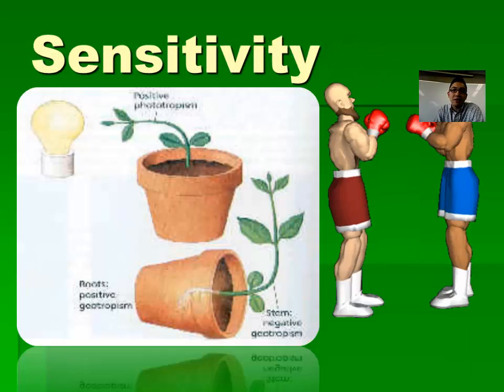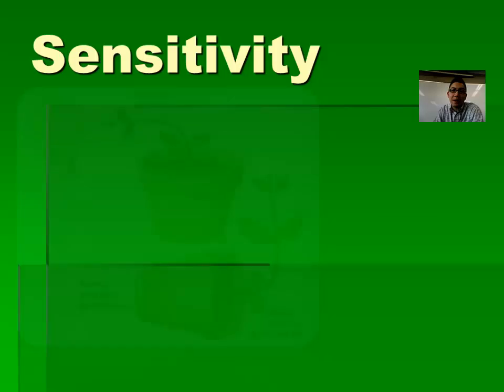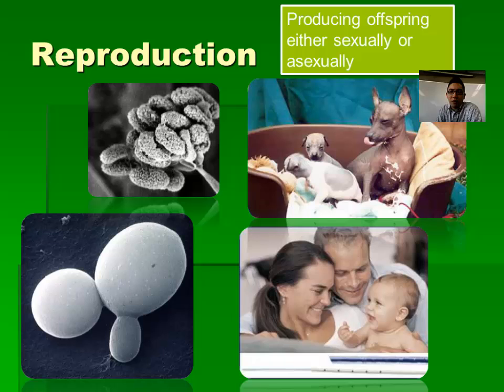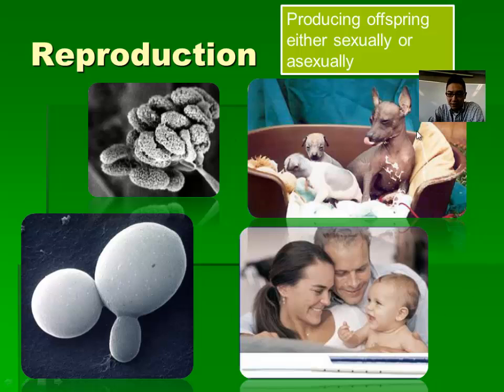Living things reproduce — but wait, don't viruses reproduce? They require host cells to reproduce, and they also lack metabolism and aren't made up of cells. Reproduction is really important though, either through asexual means or sexual means. For example, yeast reproduces asexually by budding off, and fungal spores are another example.